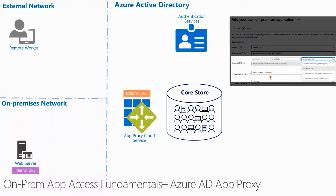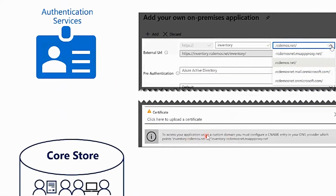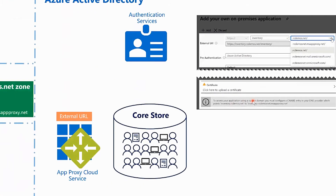To enable name resolution end-to-end, we need to do a couple of things. First, we need to configure a CNAME record in your external DNS zone. As you can see, the portal over here shows exactly what to set up in that record. Second, we need the App Proxy Cloud Service to work with TLS, which is why we also need to supply a certificate with the private key.